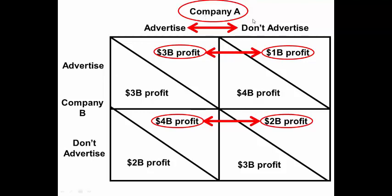If Company A advertises and Company B advertises, Company A earns three billion dollars in profit. But if Company A doesn't advertise while Company B does, Company A only gets one billion dollars. It's better to advertise in that case. Additionally, if Company A advertises but Company B doesn't, Company A earns four billion dollars, and if neither advertises, Company A only brings in two billion dollars.